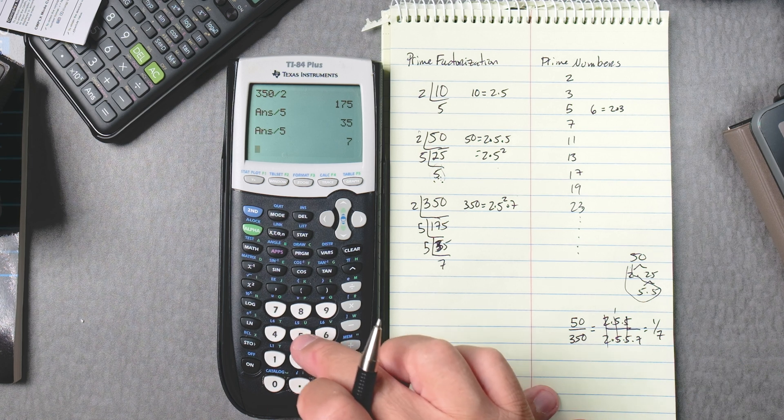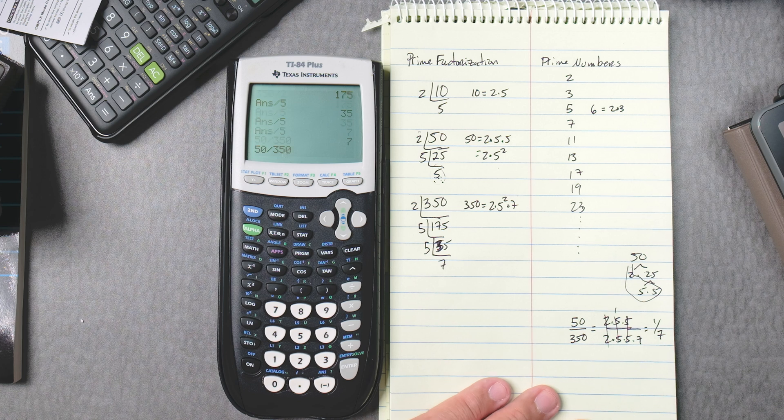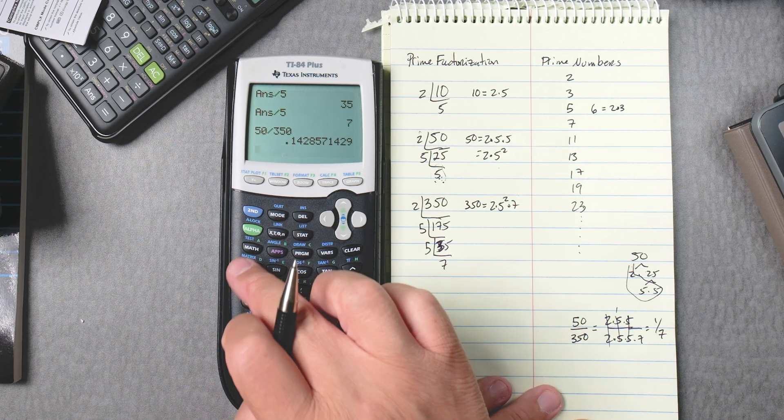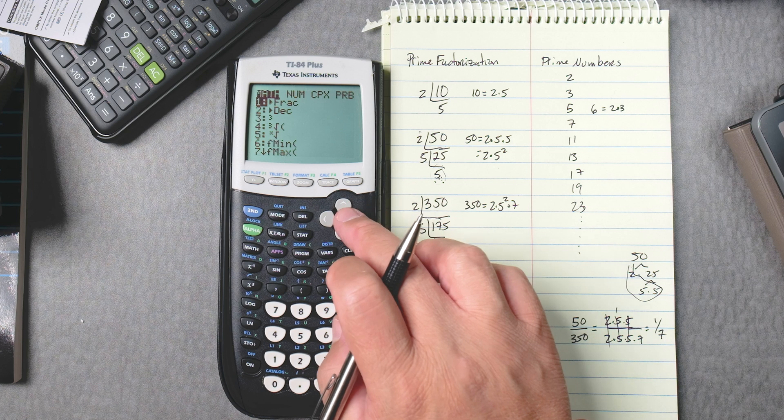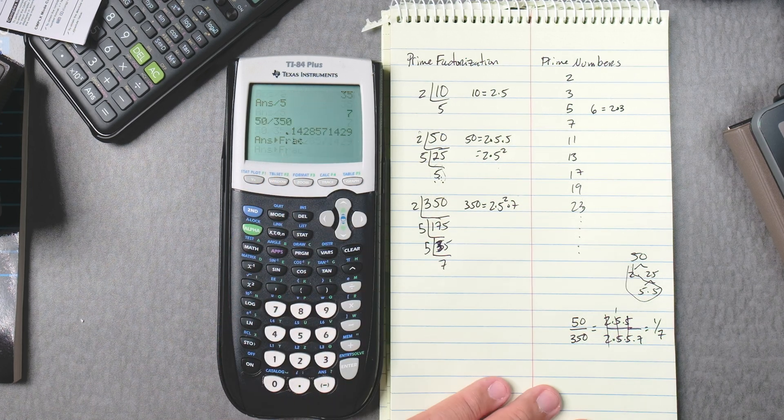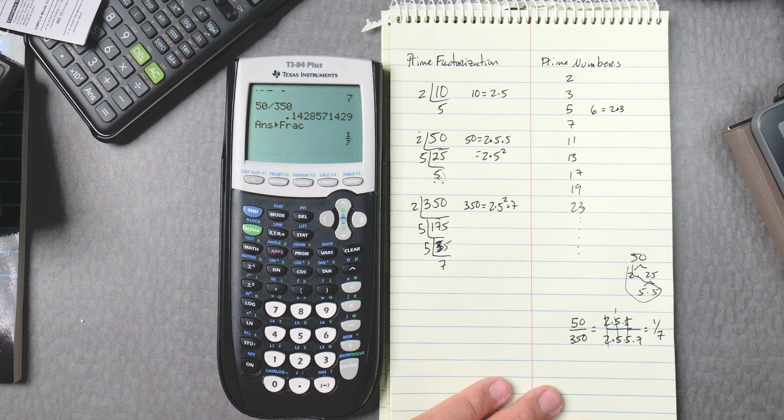In this calculator, 50 divided by 350, enter, gives you a decimal. But under math, and frac, take the answer and make it a fraction: 1 over 7. Pretty cool, pretty neat.